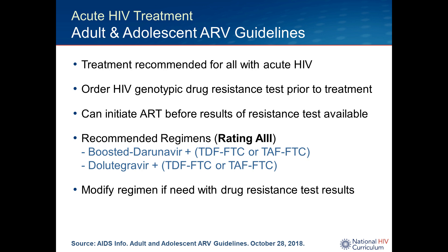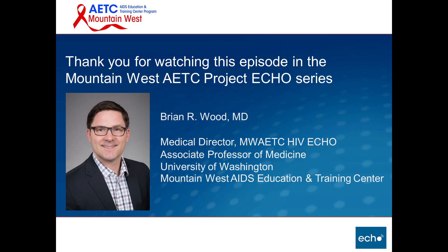To summarize three key points: first, it is really important to be able to make a diagnosis of acute HIV. Second, don't wait to start therapy — these individuals are extremely high priority to get on treatment right away. Third, if you are starting treatment without your genotypic drug resistance result, make sure to use either a boosted darunavir regimen or a dolutegravir-based regimen.